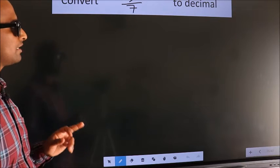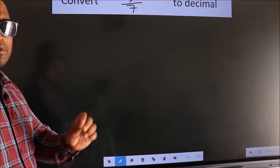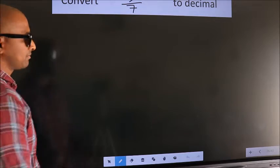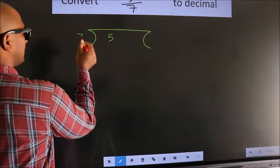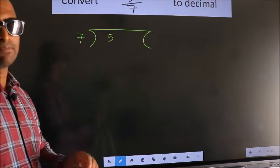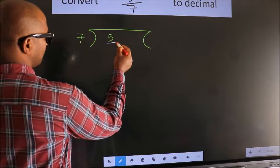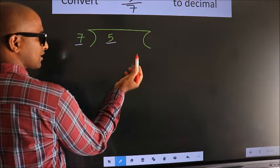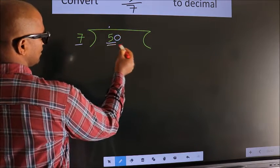Convert 5 by 7 to decimal. To convert this to decimal, we have to divide. And to divide, we should frame it in this way: 5 here, 7 here. This is your step 1. Next, here we have 5, here 7. 5 is smaller than 7. So what we should do is put a dot here and take 0. So, 50.